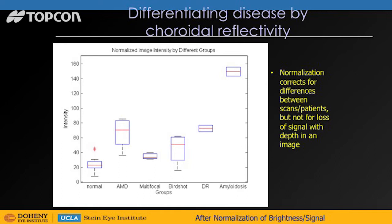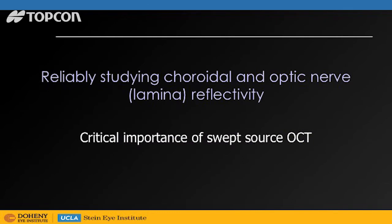The problem with this normalization approach is that while it might adjust between scans or between patients, it doesn't adjust for the fact that brightness drops with depth. As Professor Spade showed, with spectral domain OCT you get significant fall-off in signal. A patient with a thicker choroid — naturally the most posterior part of their choroid will be dimmer because of that loss of signal. This is where swept source OCT really shines and has been crucial for studying these questions reliably. We published a paper earlier this year in ophthalmology — a collaboration with Antoine Brezen in Paris — where we studied 220 patients with birdshot using swept source OCT, and observed that patients with birdshot, even adjusting for choroidal thickness, did have a brighter choroid.